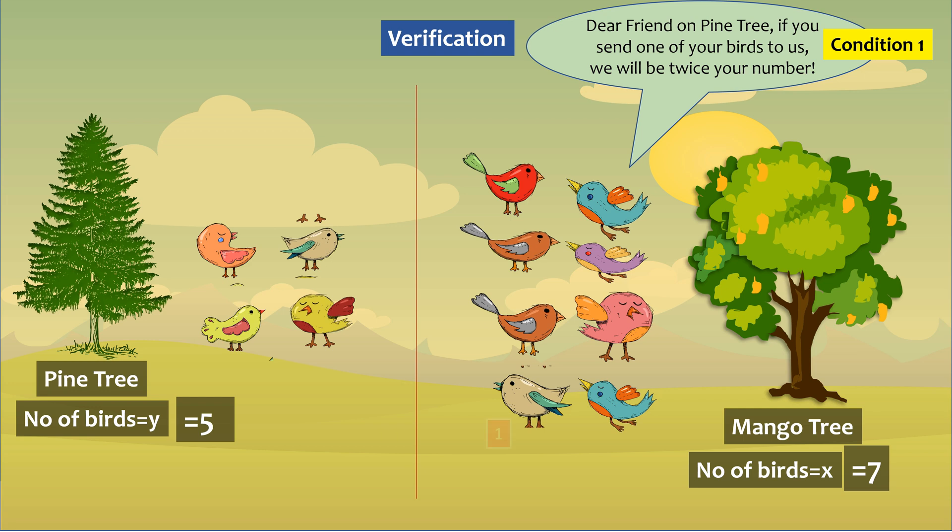So let one bird from pine tree come to mango tree. We can see that the total number of birds on mango tree now is 1, 2, 3, 4, 5, 6, 7, 8 and that on pine tree is 1, 2, 3, 4. Since 8 is double of 4, this condition is satisfied.